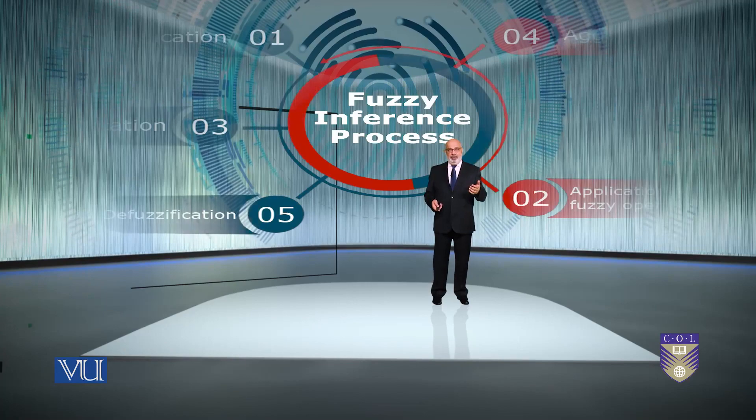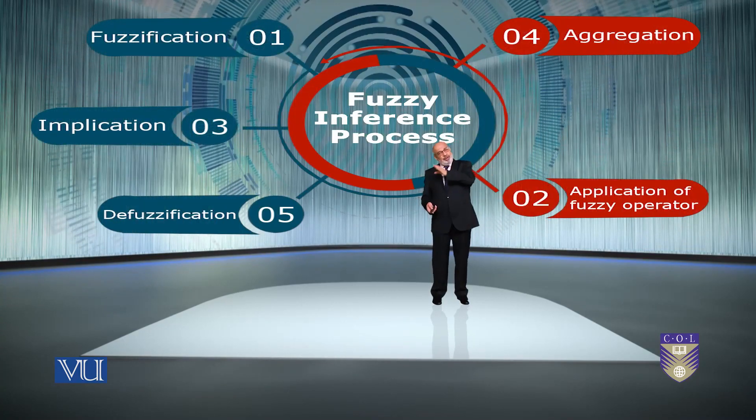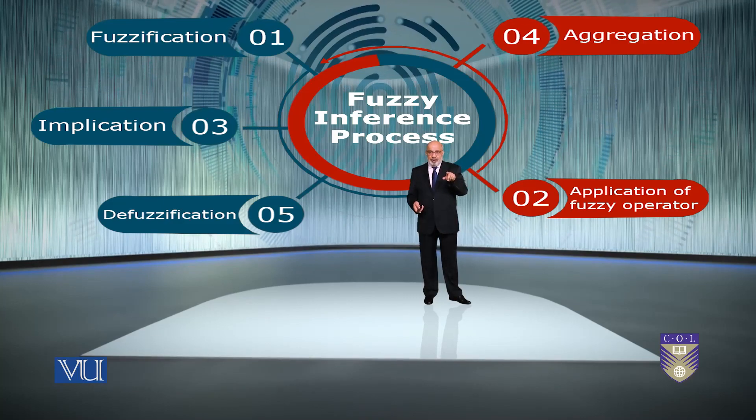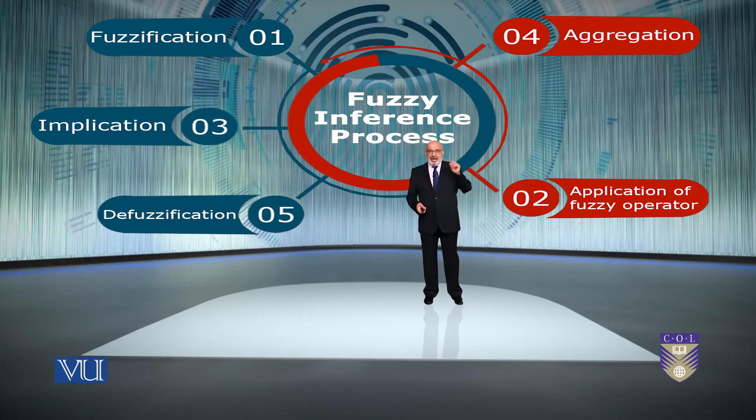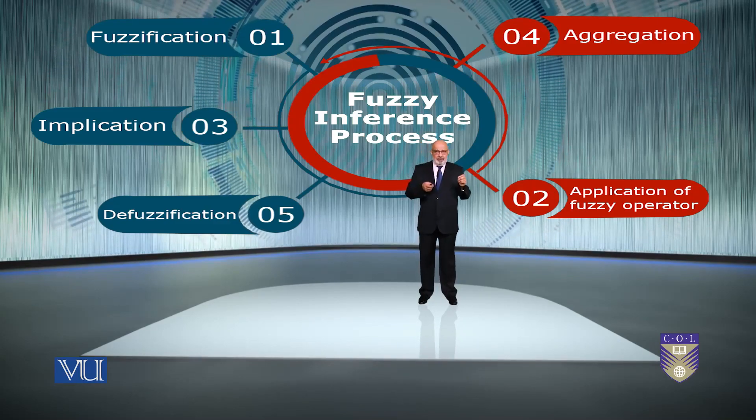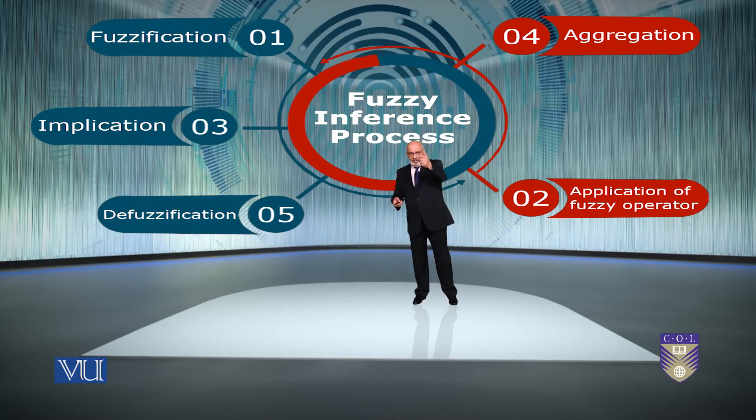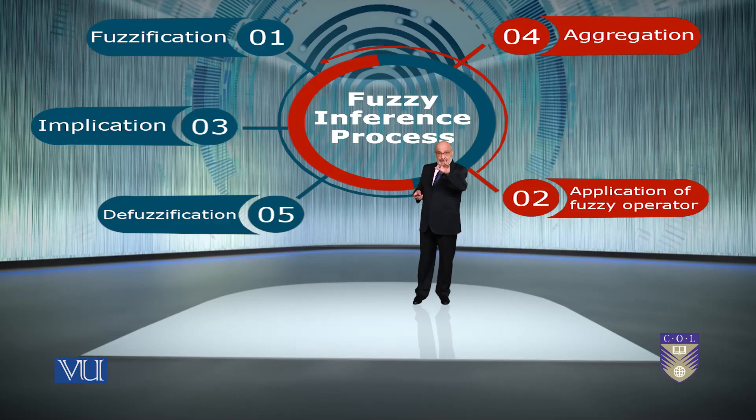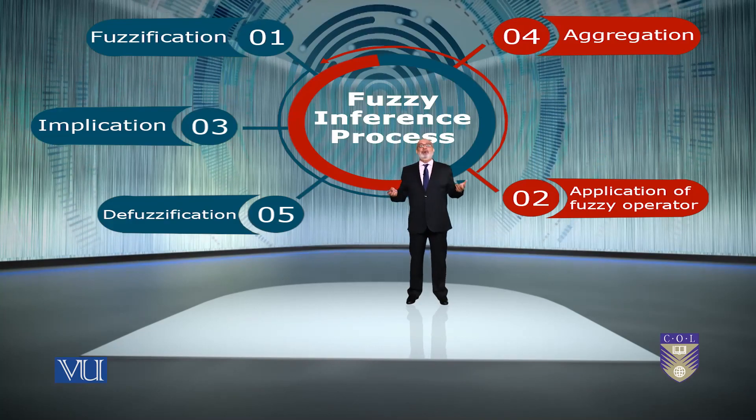So once again, what are those five steps that we carry out? Remember at the input, we have a crisp input and we want to create a crisp output. So fuzzification of input, application of the fuzzy operator, in case there are more than one, and implication, the third step. Implication is the right-hand side. What happens if this is the antecedent, left-hand side, then this is the consequence of that. That's what we call as implication, implies. If-then, remember the if-then rule. So this is same as that.